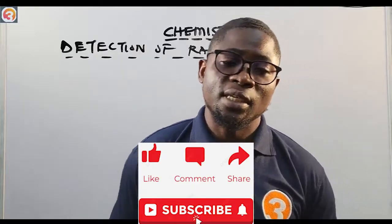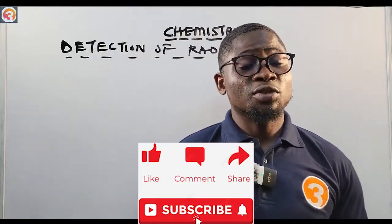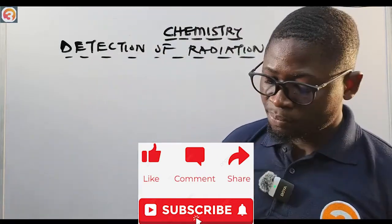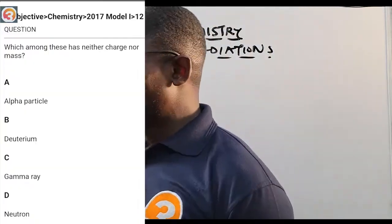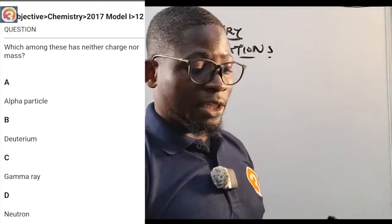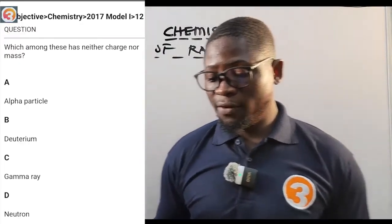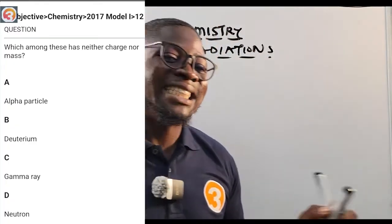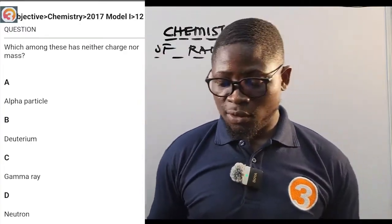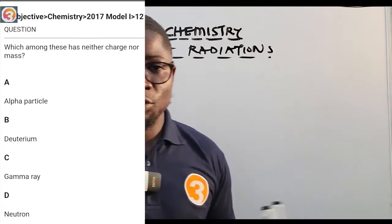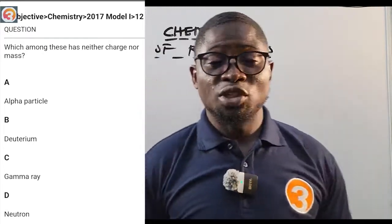From the O3 School Jump app, here is a question: which among these has neither charge nor mass? This is a 2017 question, number 12. The options are: A - alpha particle, B - deuterium, C - gamma ray, D - neutron.